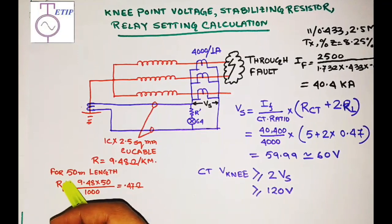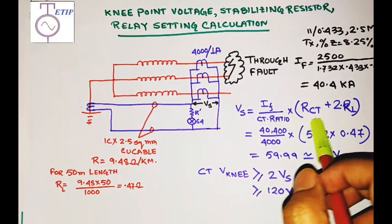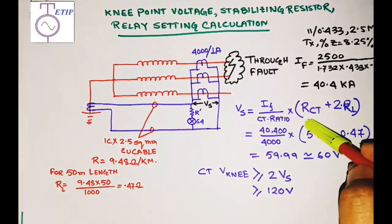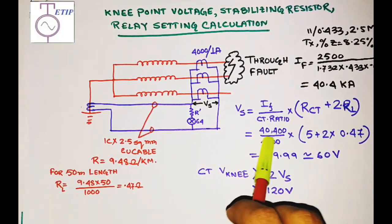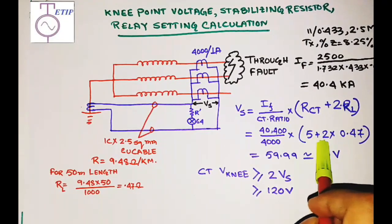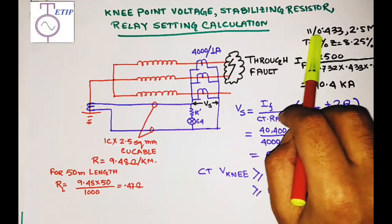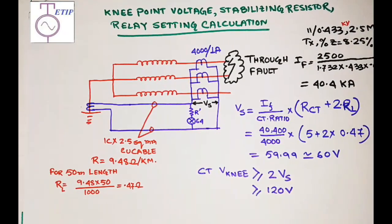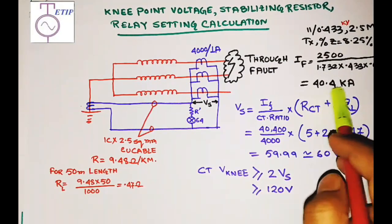You have to calculate Rl as per your project — whatever the cable length is applicable at site. You also specify Rct at the maximum value; in this example I have set it at 5 ohm, meaning I specify to the CT manufacturer that the CT resistance shall not exceed 5 ohm. For this example, using an 11 kV / 433 V, 2.5 MVA transformer with a percentage impedance of 8.25%, the calculated fault current is approximately 40 kA.